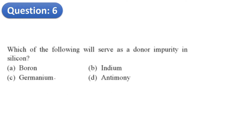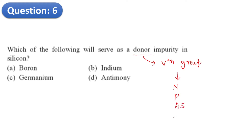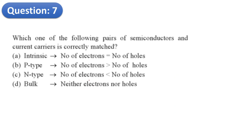Question 6: Which of the following will serve as a donor impurity in silicon? A donor impurity requires a fifth group element. The fifth group elements are nitrogen, phosphorus, arsenic, antimony, and bismuth. Therefore option D is the right answer.